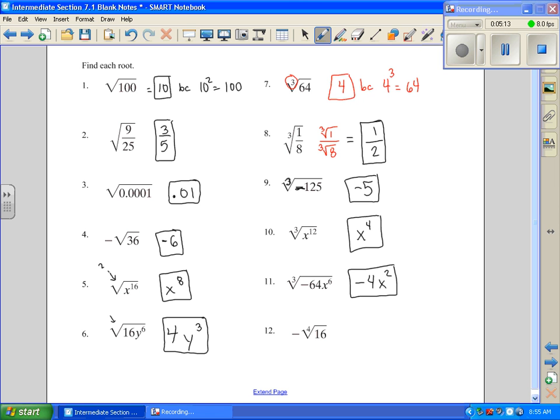And we're going to move on to number 12. Now I need to know what multiplied 4 times gives me 16. So 2 times 2 times 2 times 2 is 16. My answer is 2. But this negative sign that was out front just sits out front. Now we bring it down.